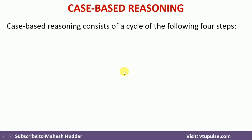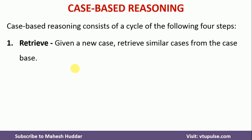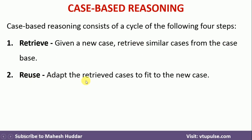Now we will look at the different steps to be followed in Case-Based Reasoning. The first step is Retrieve: given a new case, we need to retrieve the most similar cases from the case base library and find the closest match. The second step is to check whether the retrieved solution is exactly the same or requires some modification for the new case. If it is exactly the same, no modification is needed; otherwise, we modify it to fit the new case.